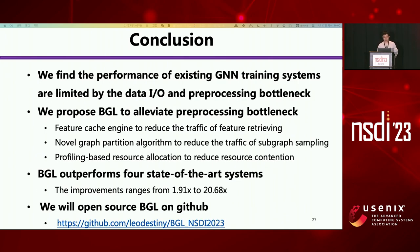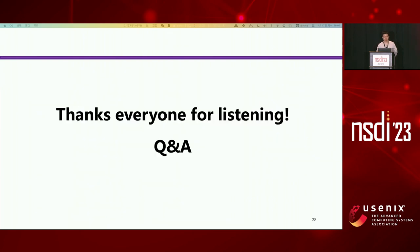In conclusion, we found the performance of existing GNN training systems is limited by the data IO and pre-processing bottleneck. We propose BGL to alleviate this bottleneck with three design choices: a feature cache engine to reduce feature retrieving traffic, a novel graph partition algorithm to reduce subgraph sampling traffic, and profiling-based resource allocation to reduce resource contention. Evaluation shows BGL outperforms four state-of-the-art systems. We will open-source BGL on GitHub. Thanks everyone for listening.